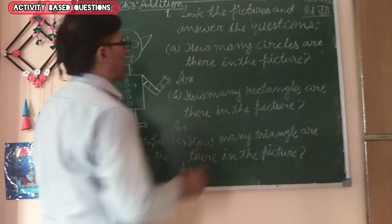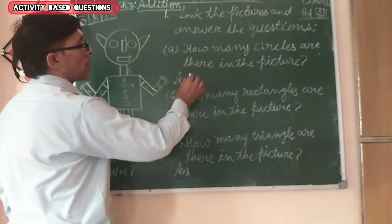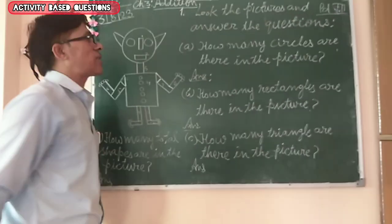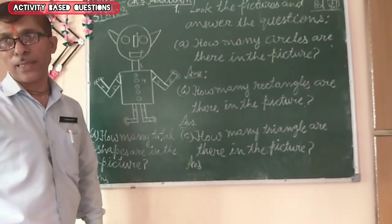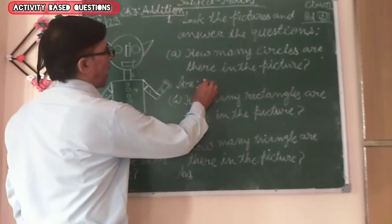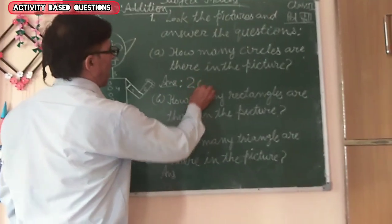How many circles are there in the picture? 28. Yes.